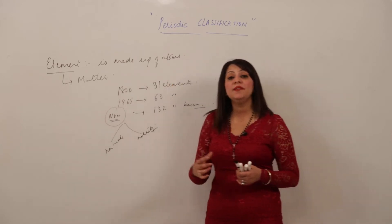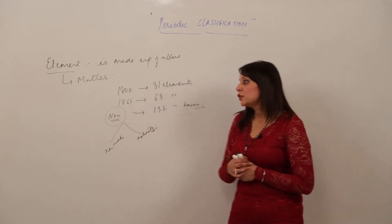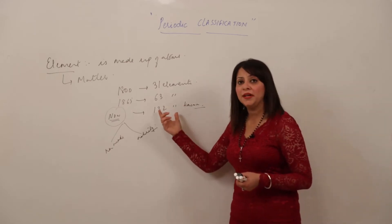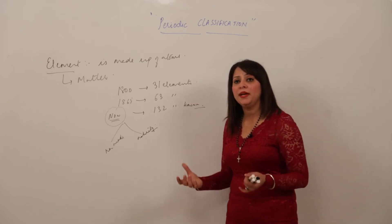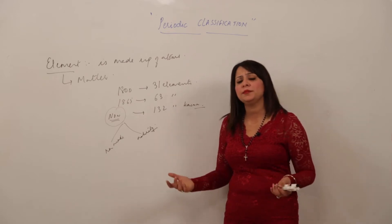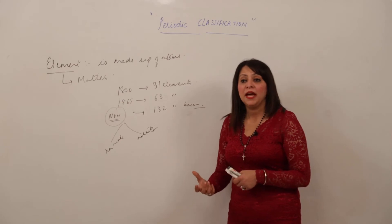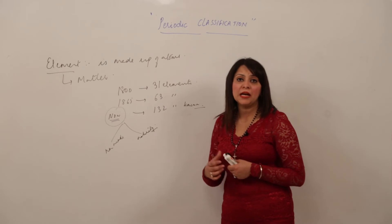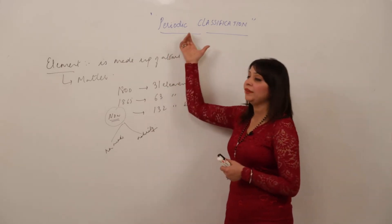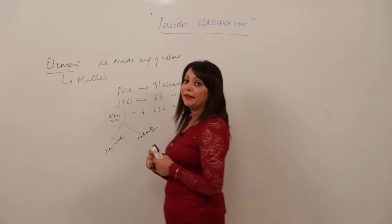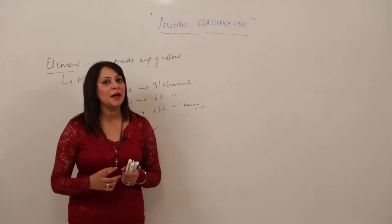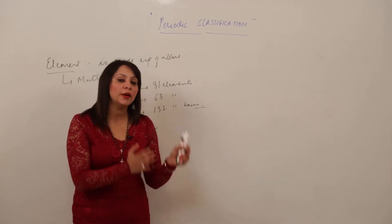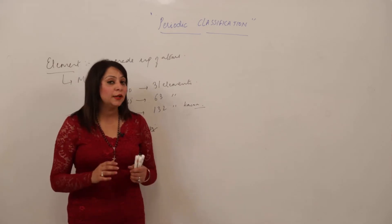So many elements are being discovered daily. If we wish to study about elements individually, it will be very difficult to study all 132 elements because there are so many properties — how they look, how they behave, how they react with hydrogen, oxygen, or any kind of material, their physical properties, their chemical properties. To make the study easier, we need a classification. Classification means grouping similar elements together and separating them from dissimilar ones.